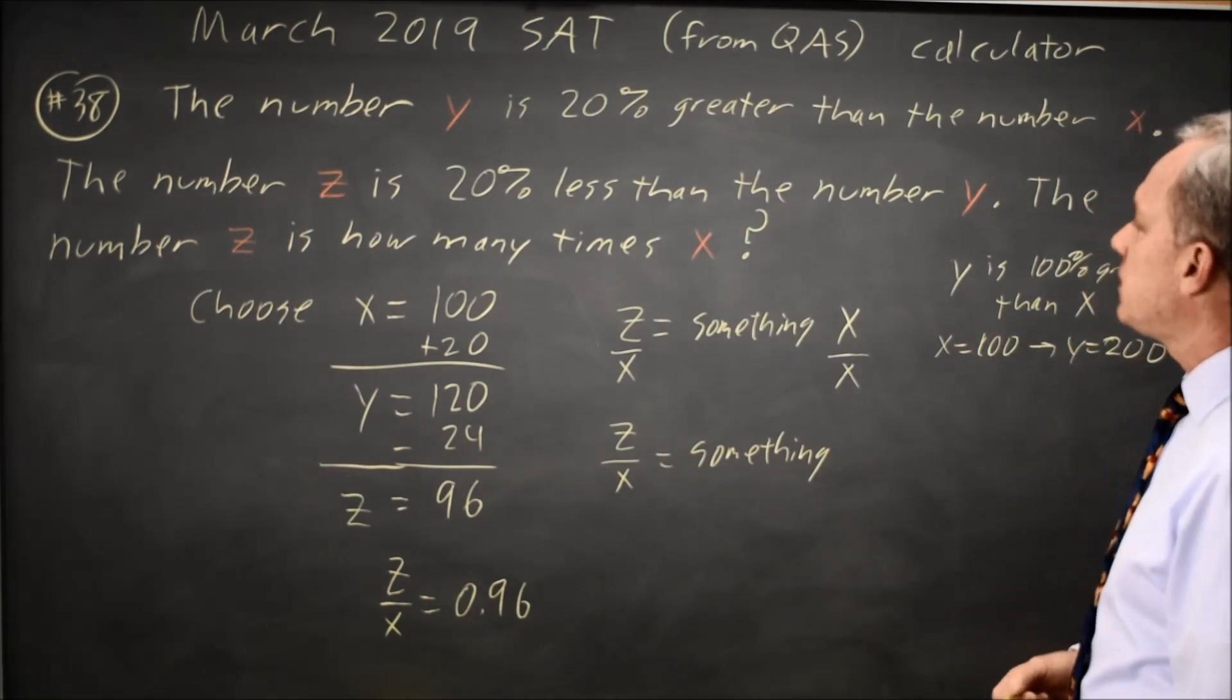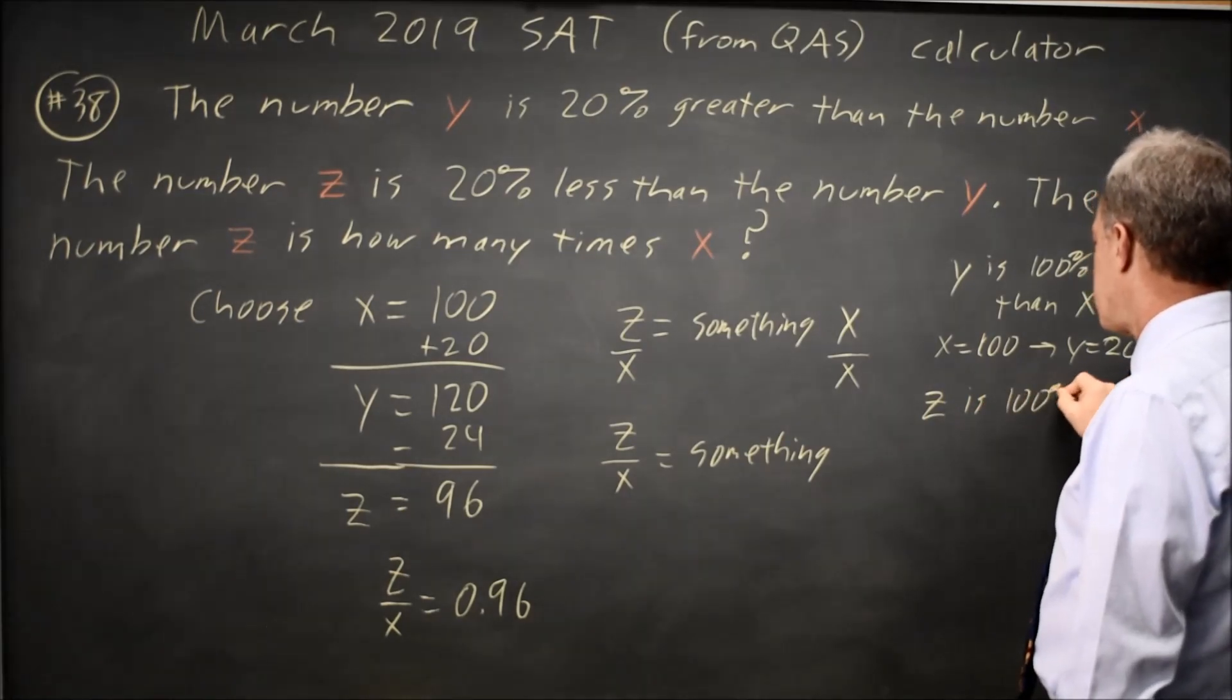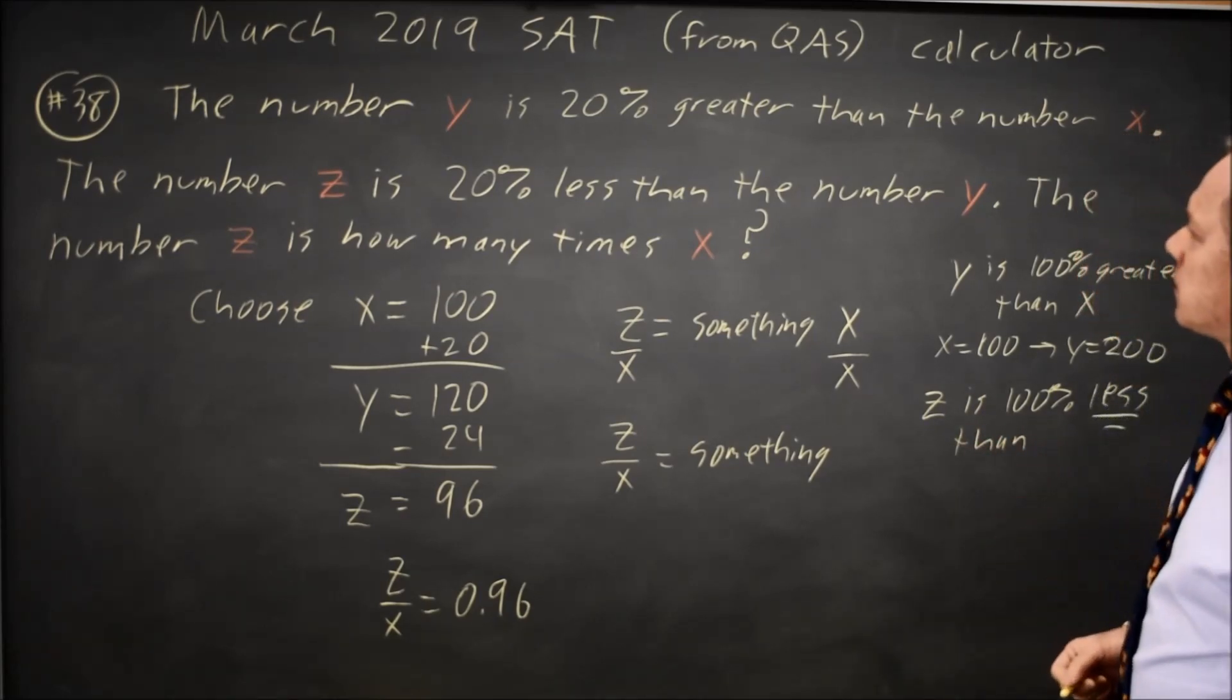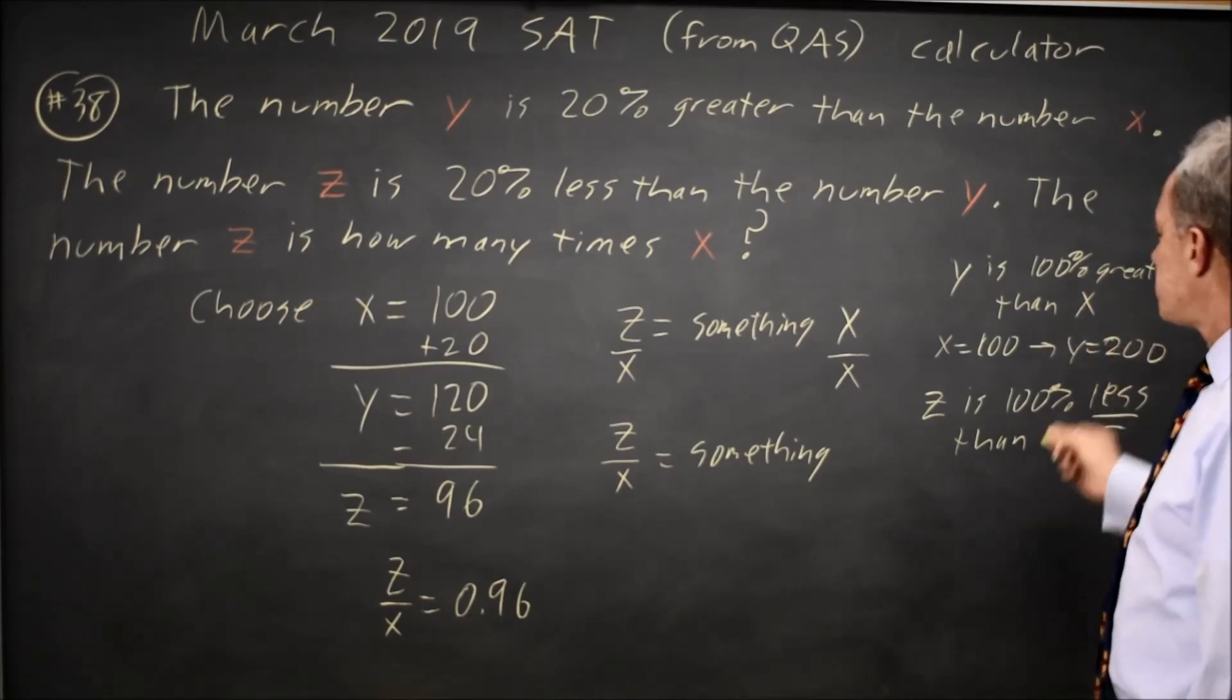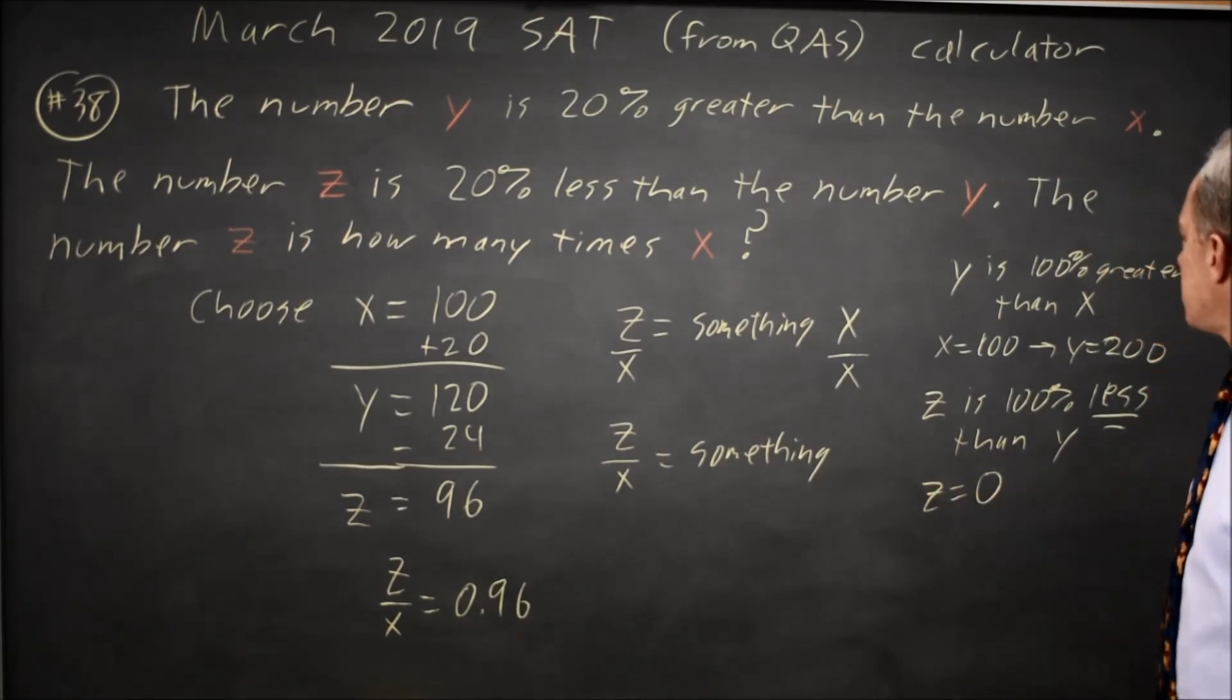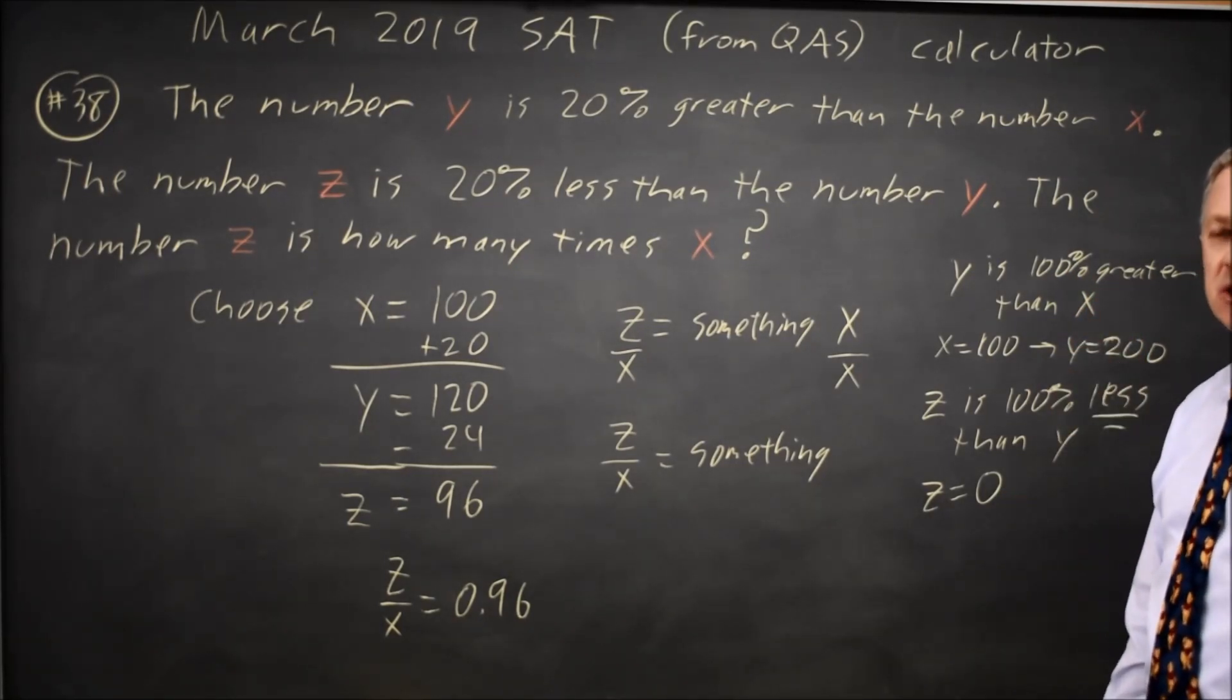Now Z is, I'm going to use the same percentage as I used here. Z is 100% less than Y. If Y is 200 and Z is 100% less than 200, Z equals 0. And we see that the 100% greater only adds 100, but the 100% less subtracts 200.